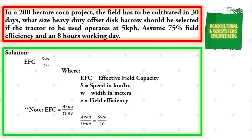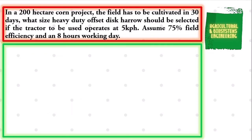We now have: Area / Time = Speed × Width × Field Efficiency / 10. Having this equation, we can now solve for the value of W — the size of the harrow, or the width of the implement.